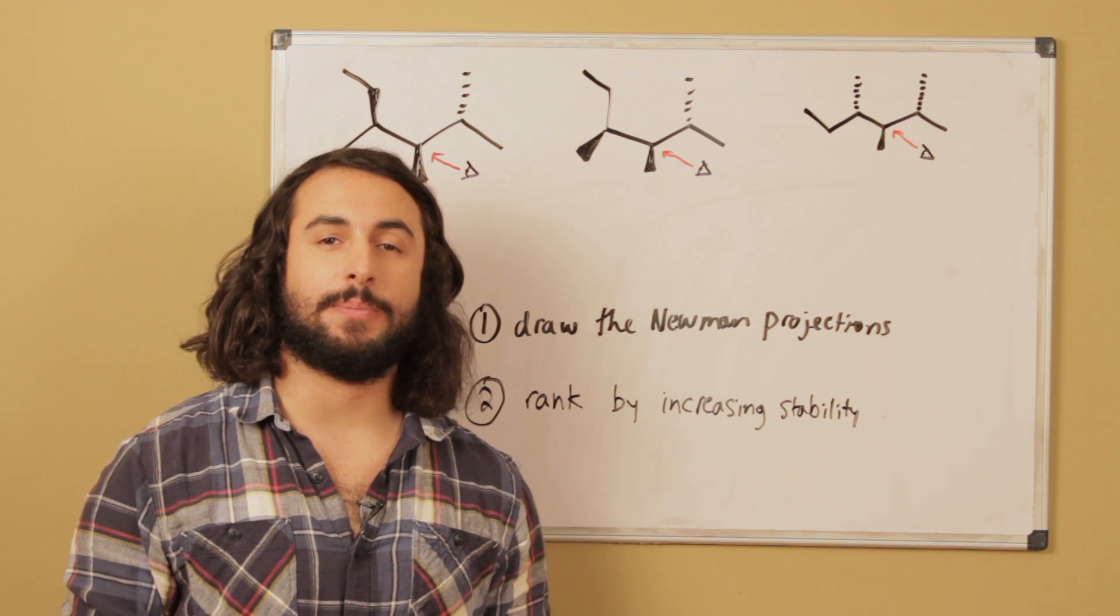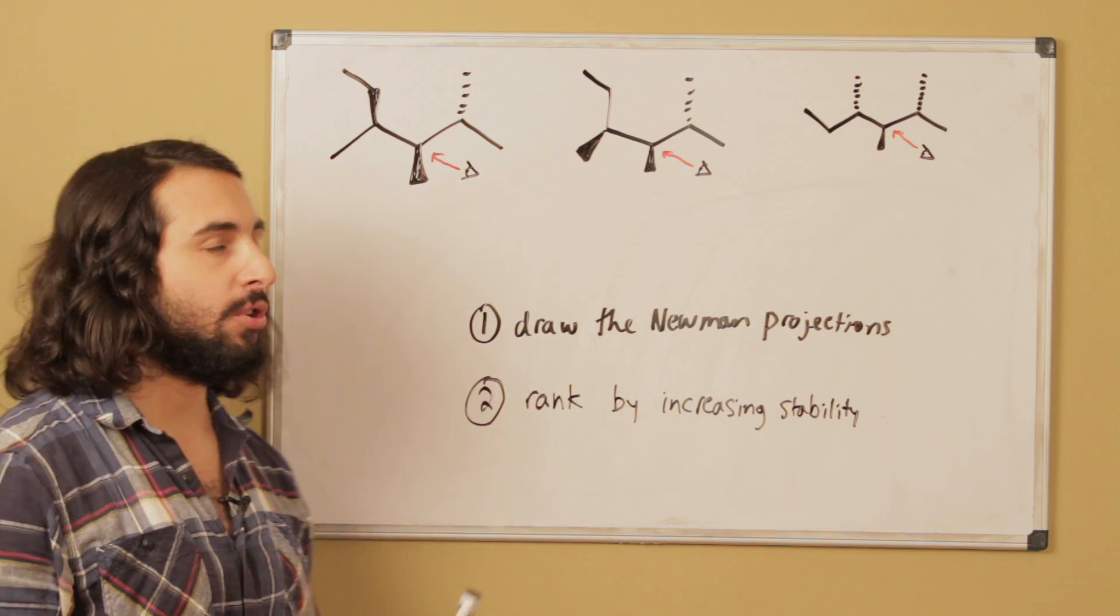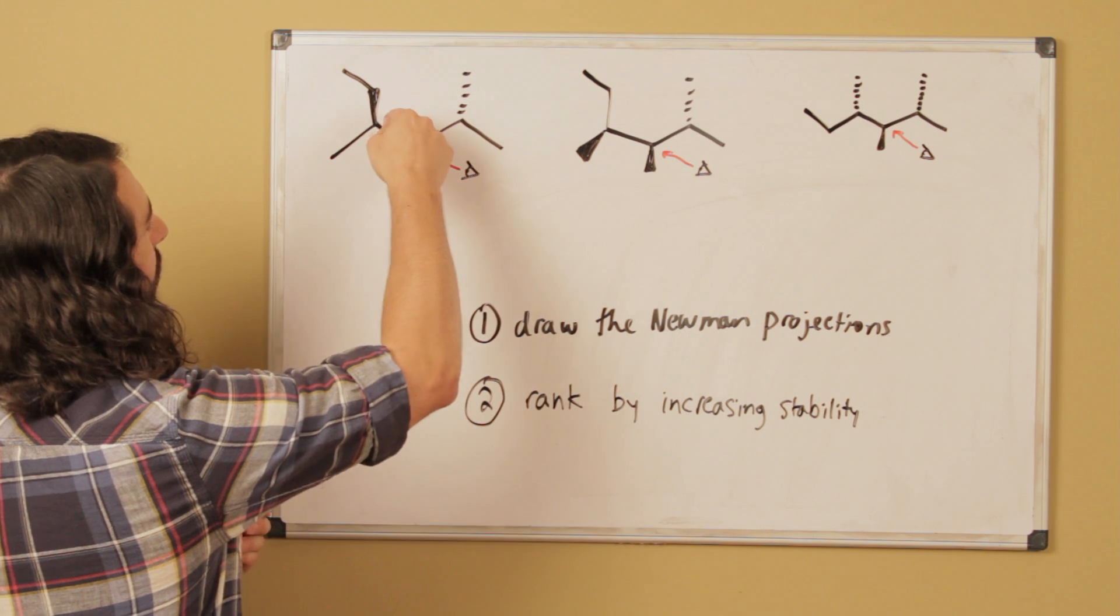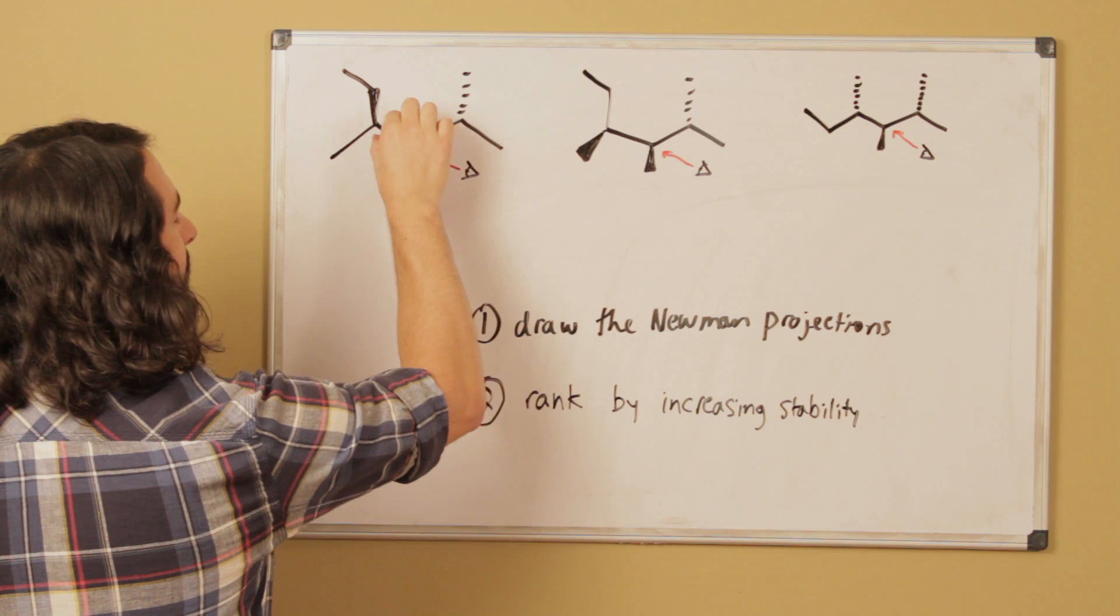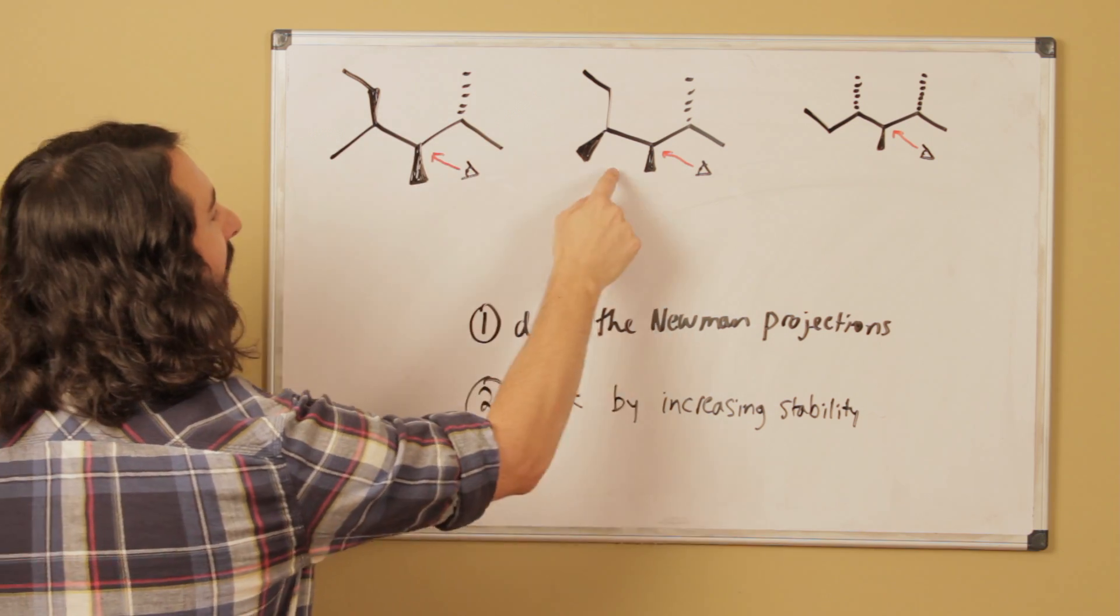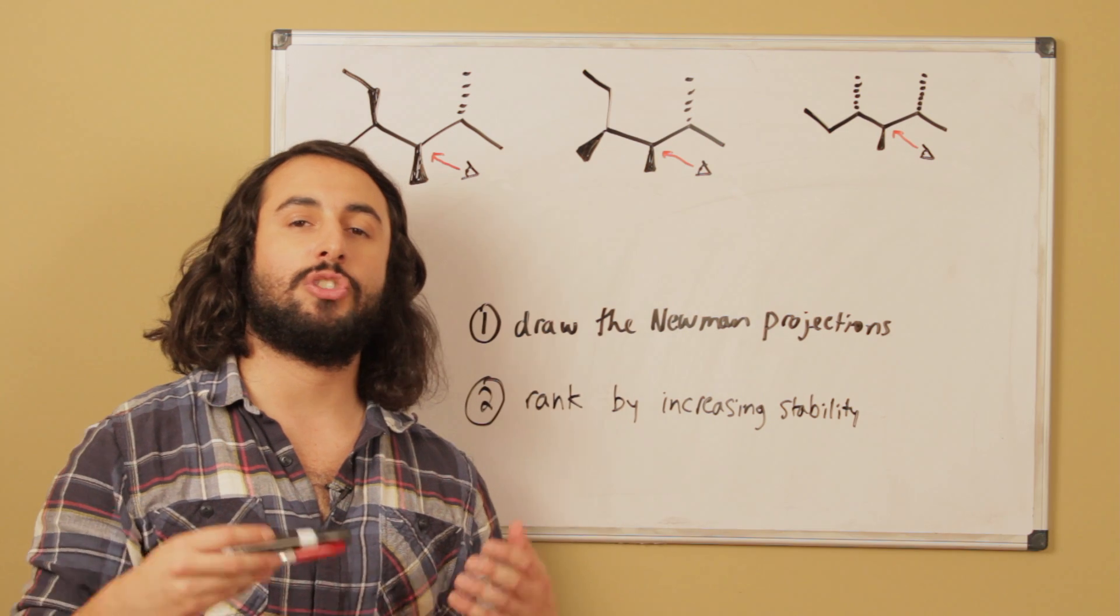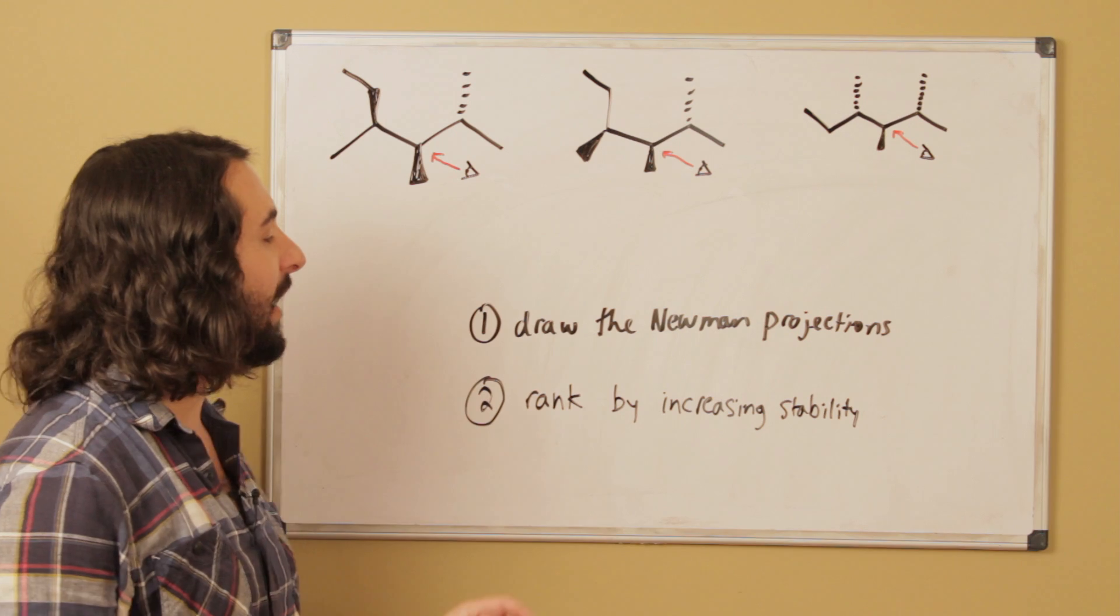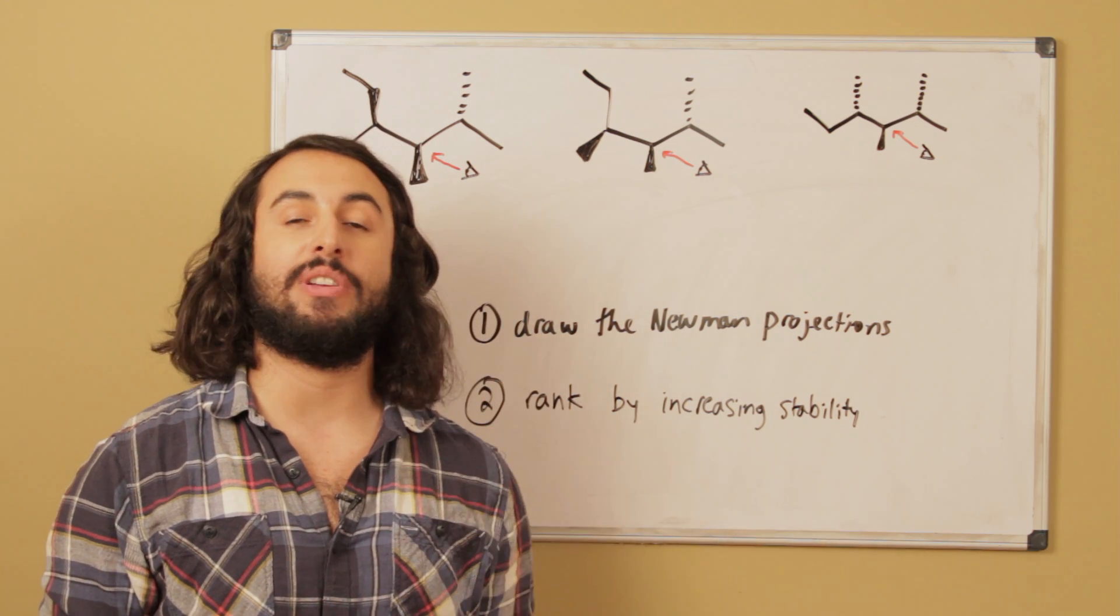Okay guys, today's practice problem is about Newman projections. So what I've done is I've drawn a molecule here and I've drawn three different conformations that occur as we rotate around this bond here. So if we're rotating this carbon-carbon sigma bond right there, we can get these three different conformations for this exact same molecule. So let's draw the three different Newman projections that result from these three conformations and then let's rank those conformations in terms of increasing stability.